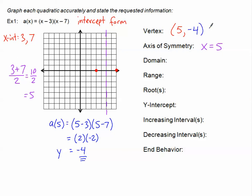Now I have my vertex at (5, negative 4). Let's plot that — I'll put a little star since that's our starting point. The value of a is positive 1, so when I input 1, I output 1; when I input 2, I output 4 — and that's already there as the x-intercept, which is a nice double-check. We plot the symmetrical points on either side and connect them to draw our parabola.